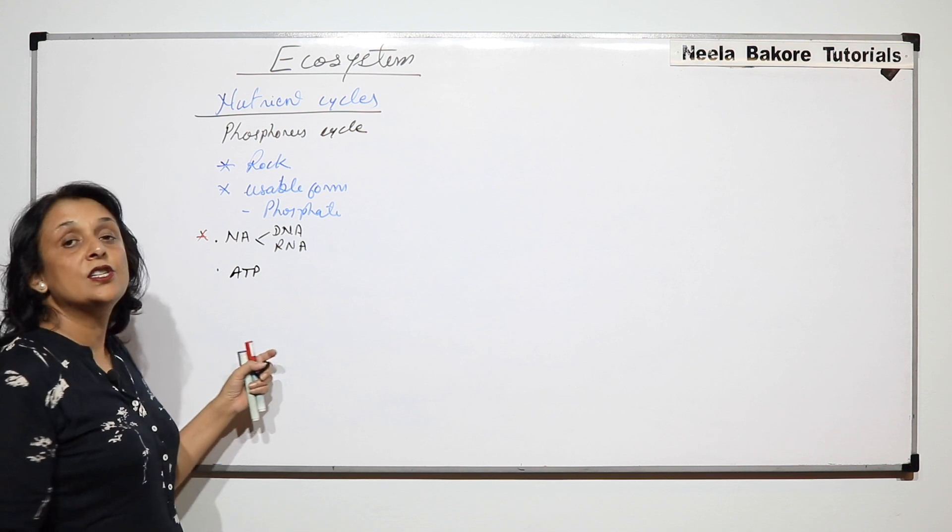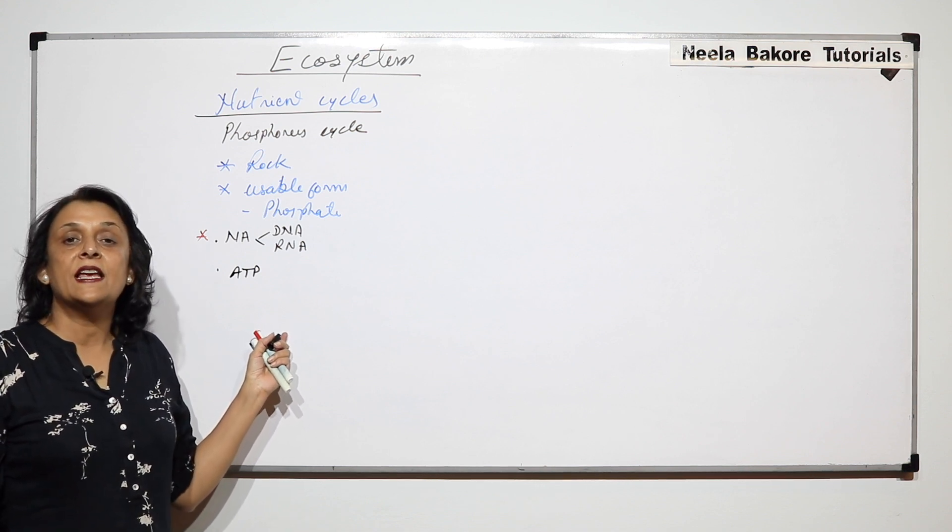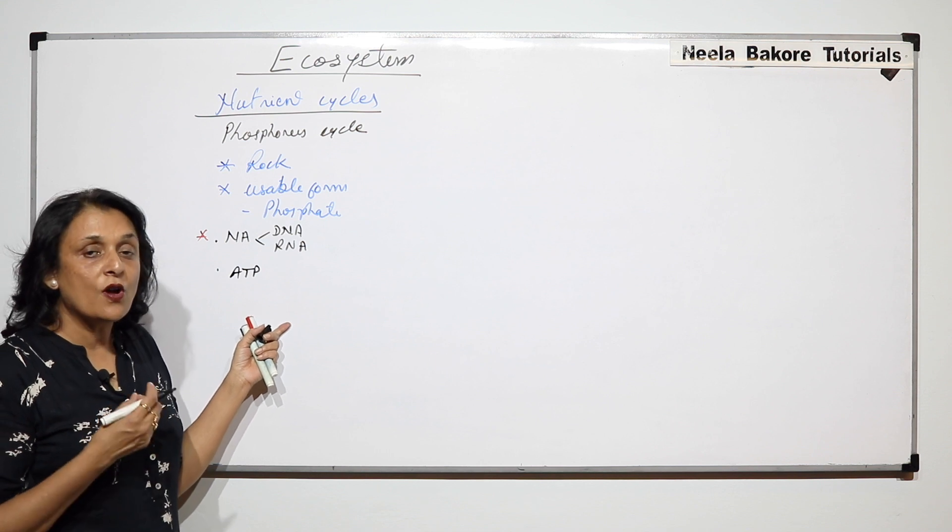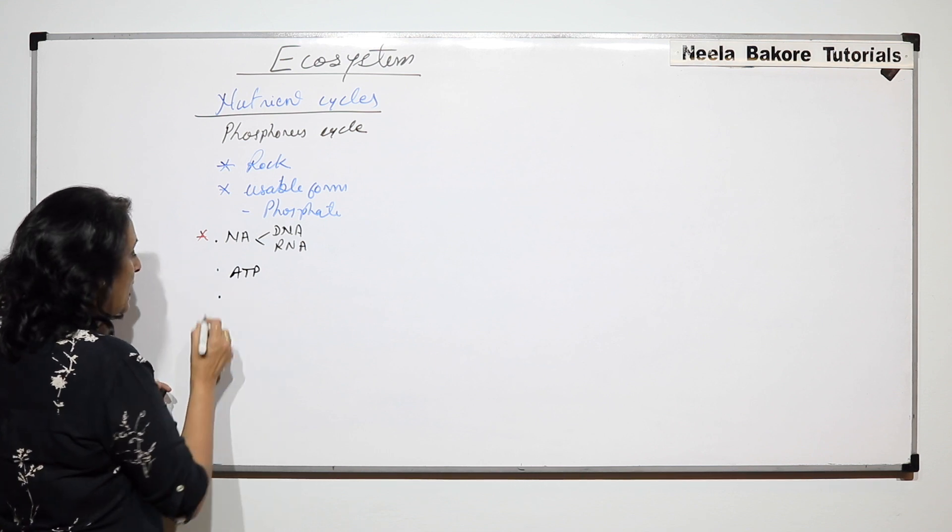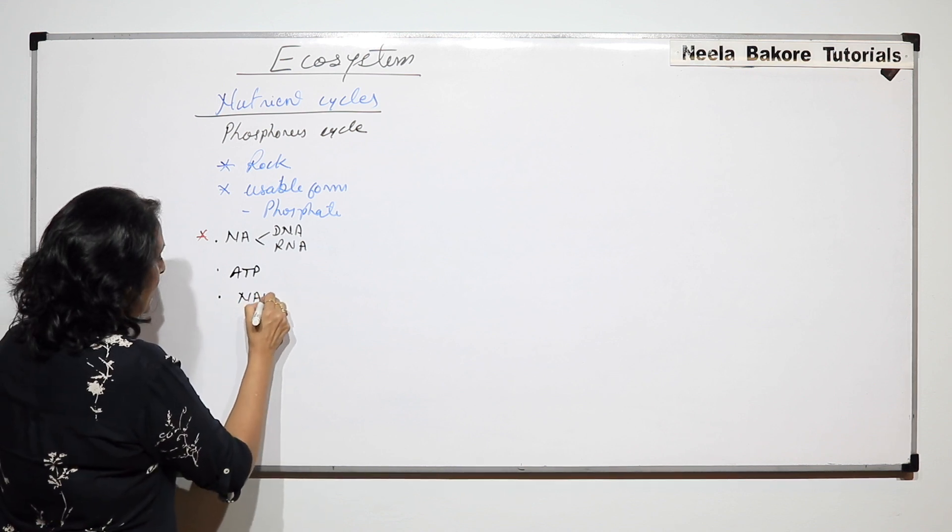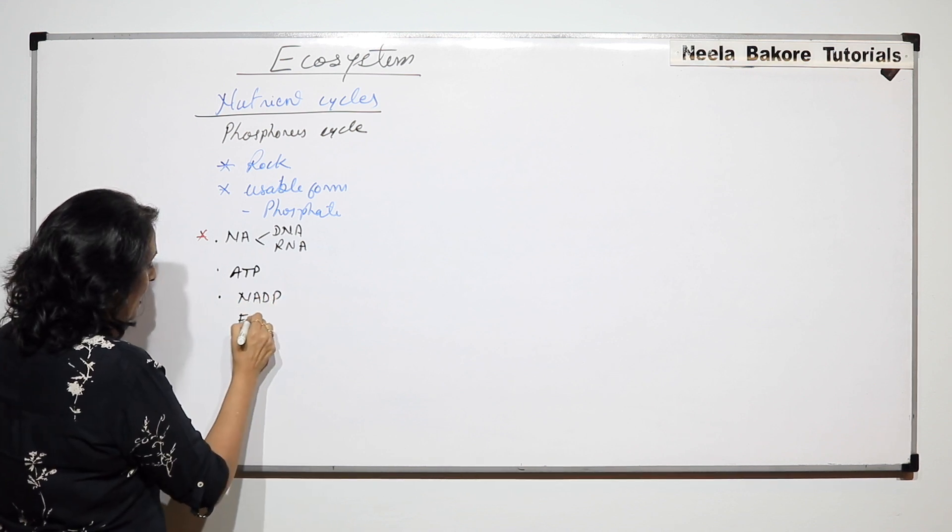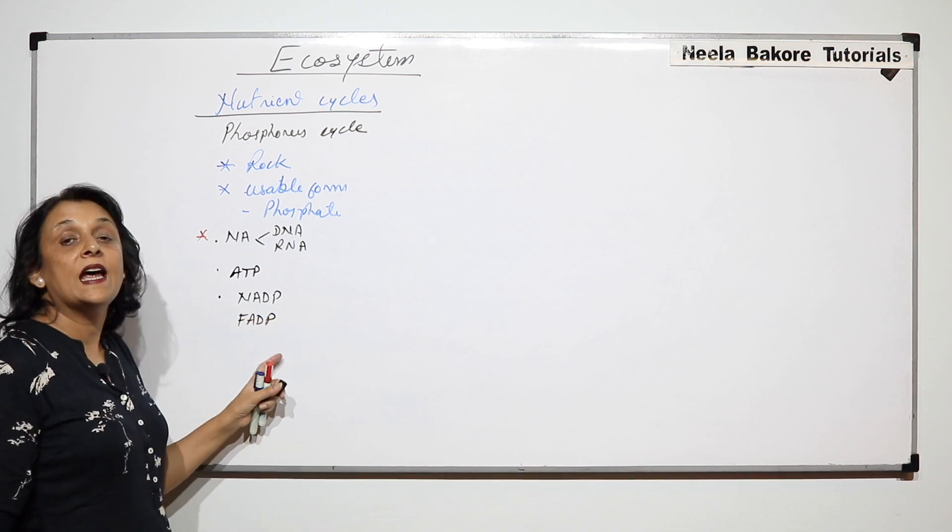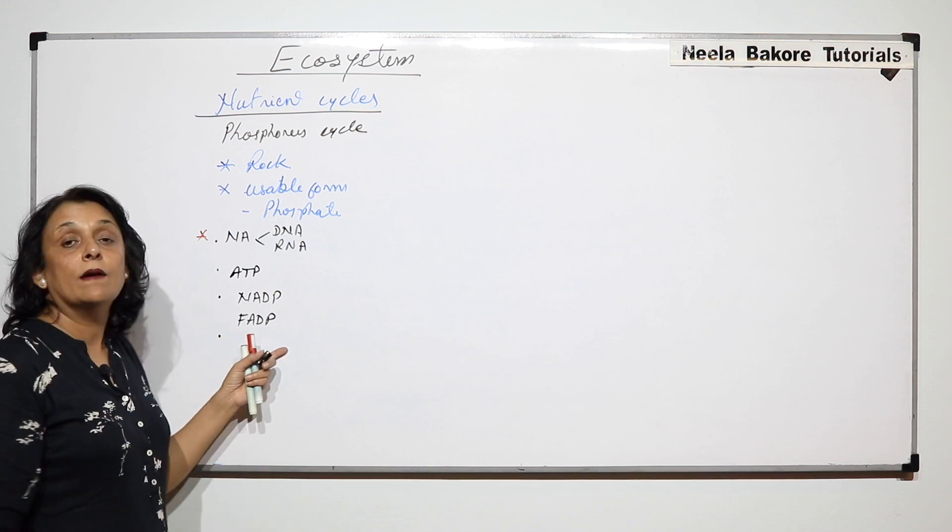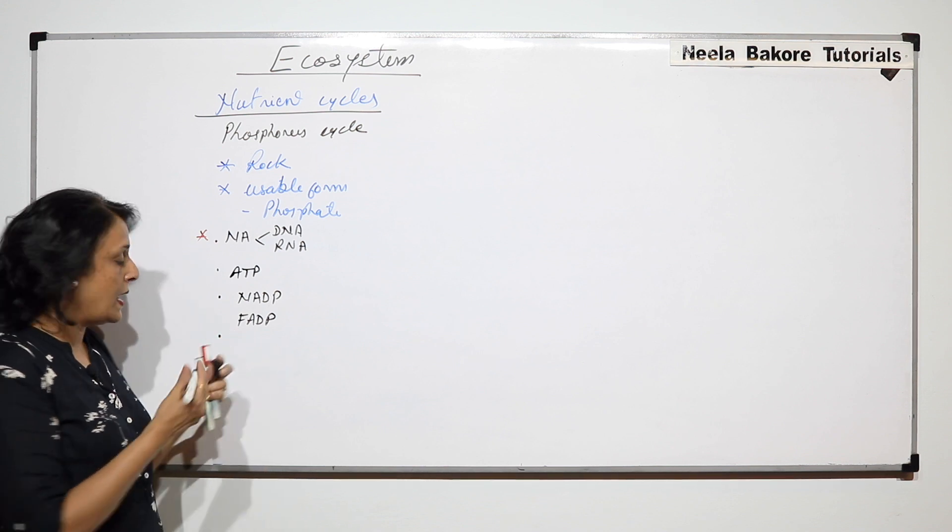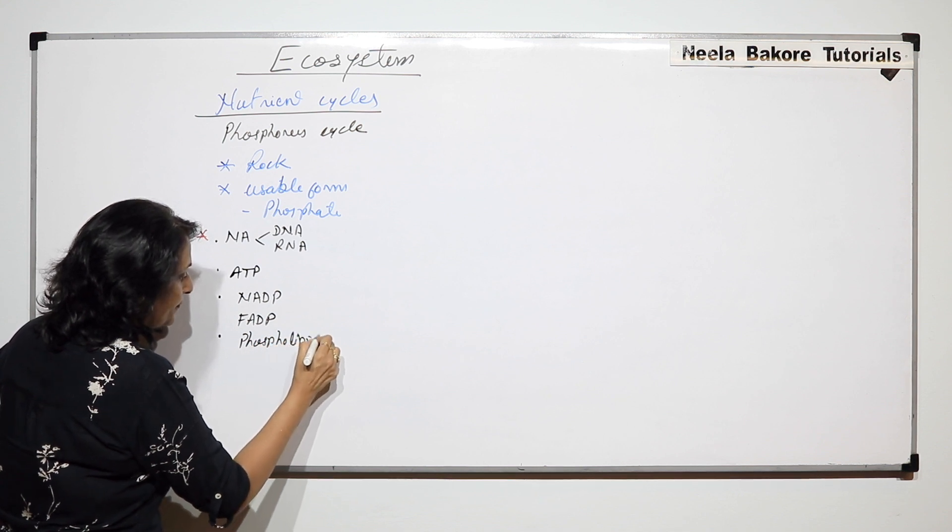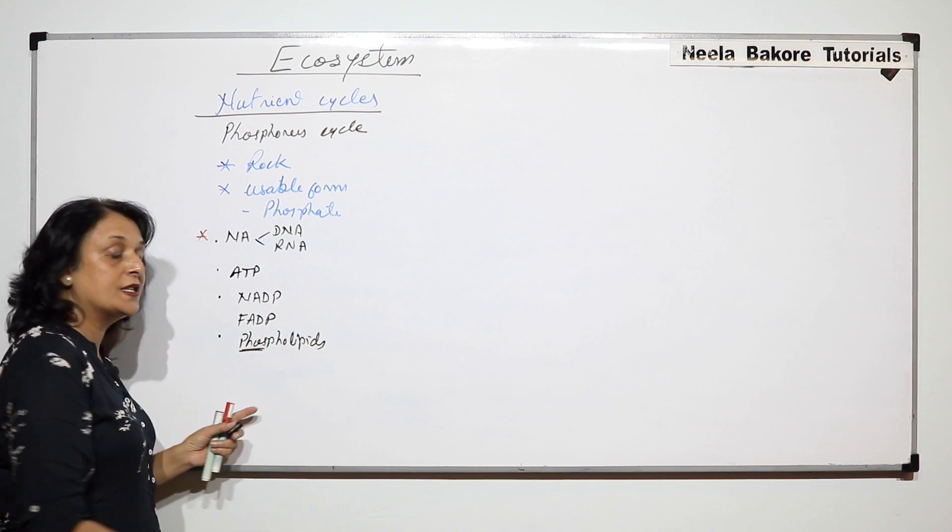ATP, the energy currency molecule which provides energy, is triphosphate. Without this we would not have this energy-giving molecule. Then there are certain coenzymes like NADP, FADP - this P stands for phosphate. Then our plasma membrane is made of phospholipids.